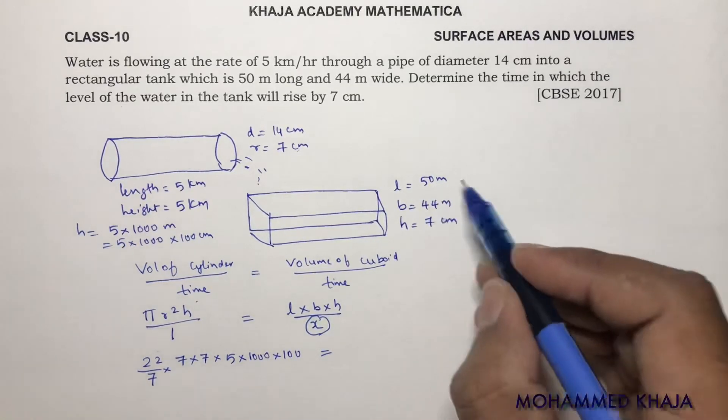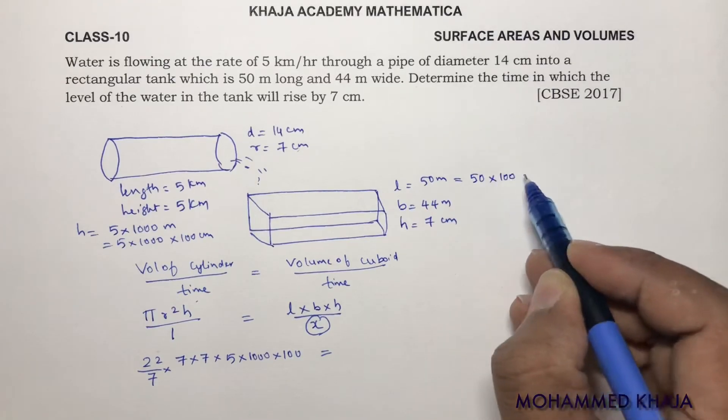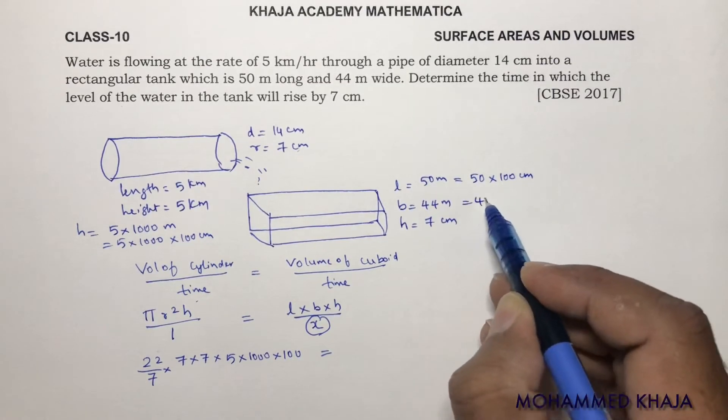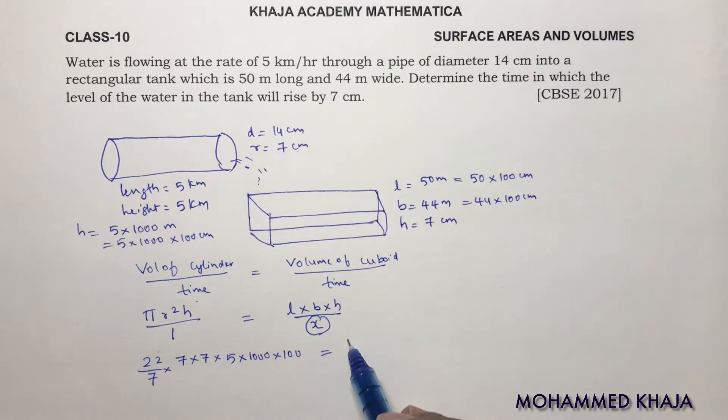And here length is, it is in meters. So write this also in 50 times 100. This is 44 into 100. So length is 50 into 100, breadth is 44 into 100, height is 7 by x.